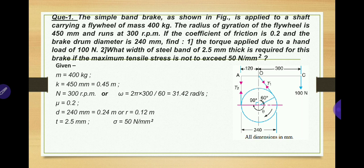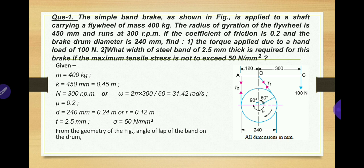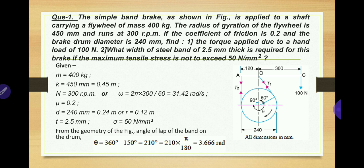First, find the angle of wrap θ from the diagram — it is not given directly in the problem description. From the diagram, θ = 360° − (90° + 60°) = 360° − 150° = 210°. Converting to radians: θ = 210 × π/180 = 3.66 radians. Always calculate the angle of wrap first if it is not directly given.